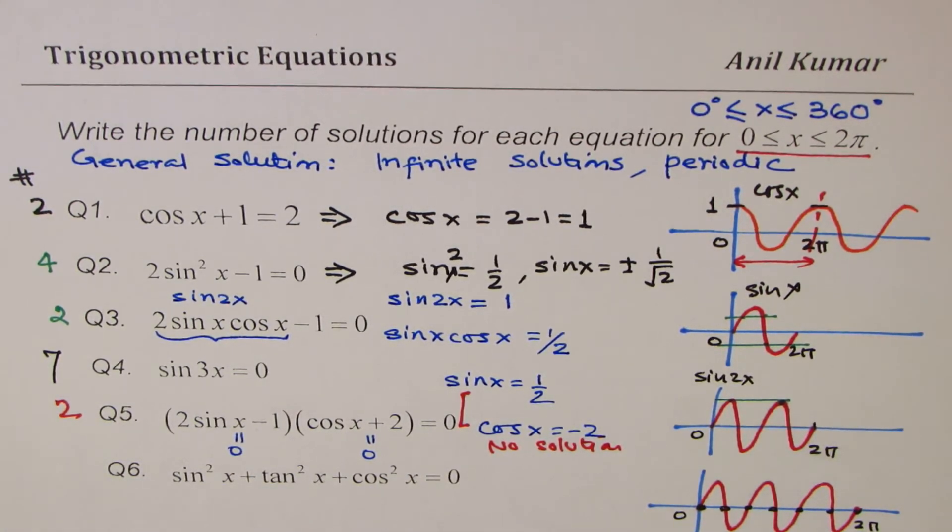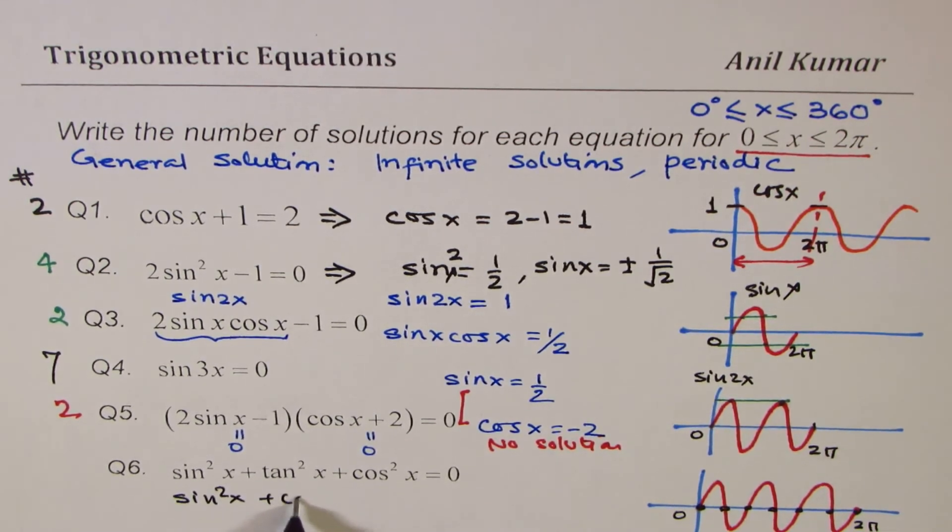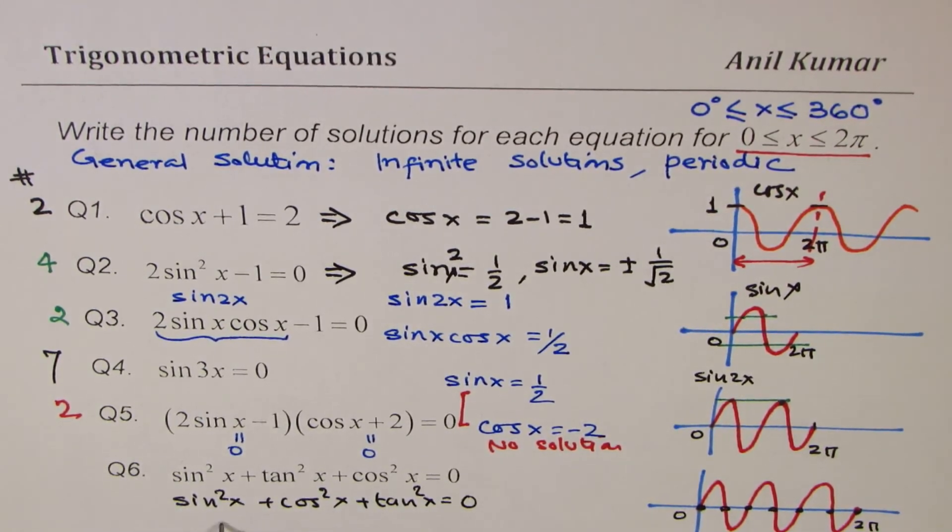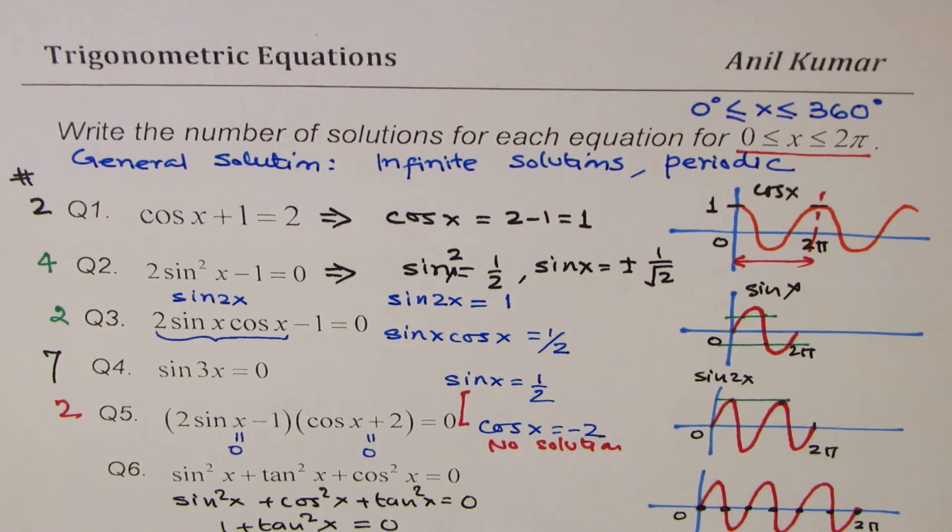The last question here is sin²x + tan²x + cos²x = 0. You may have to work a little bit. Sin²x + cos²x is what? Let me rewrite. We have sin²x + cos²x + tan²x = 0. Now, this portion is 1. So we have 1 + tan²x = 0. That literally gives you tan x = what? If I write minus, then you will say, well, there is no solution, correct?